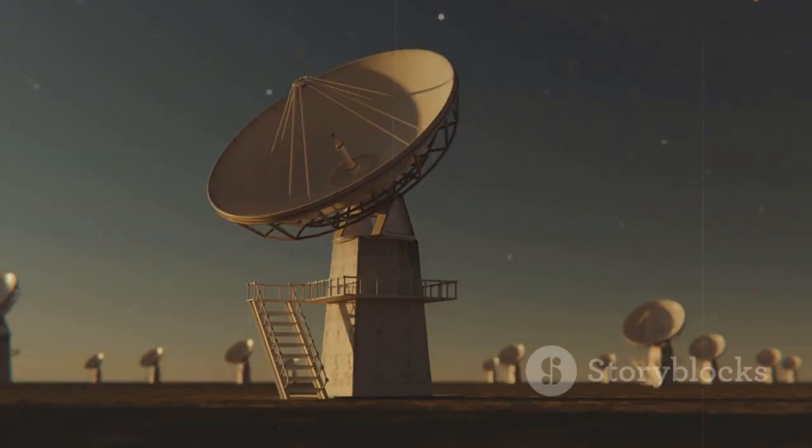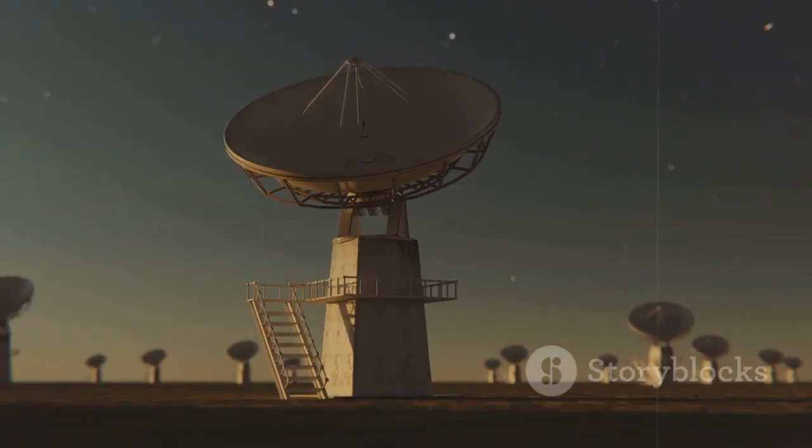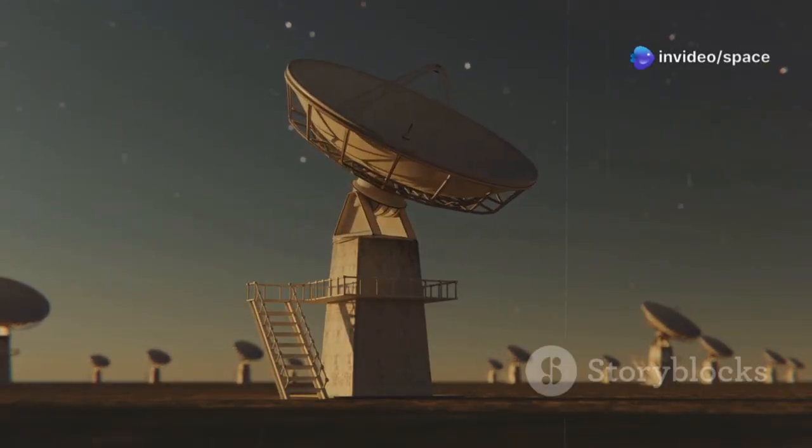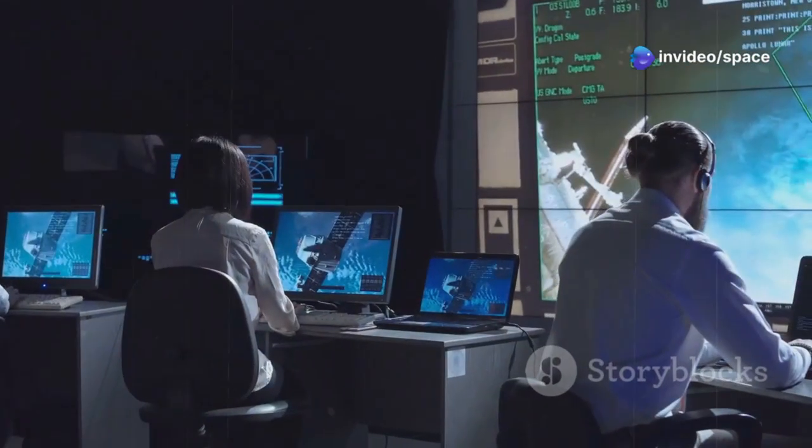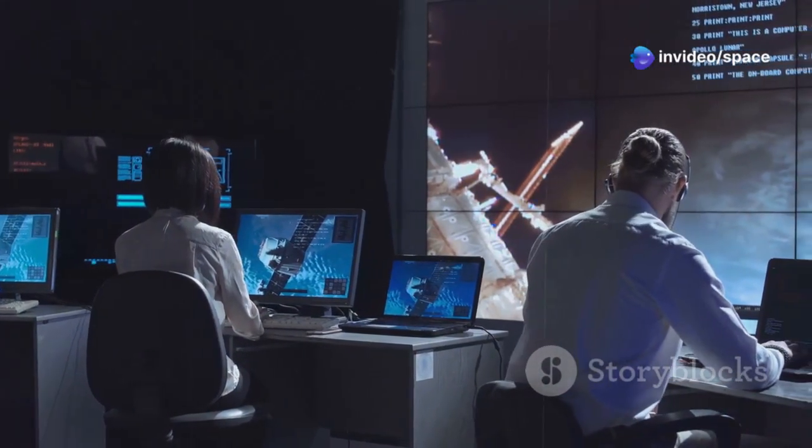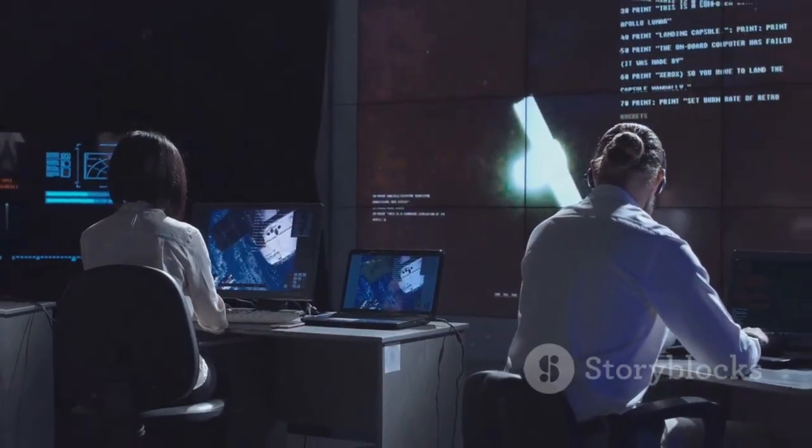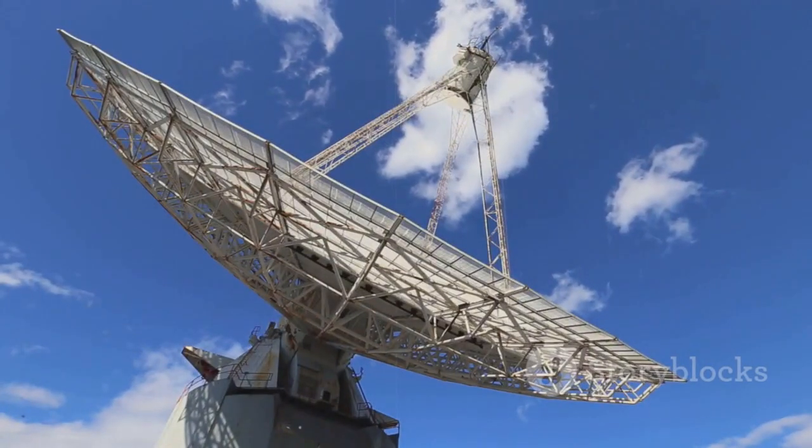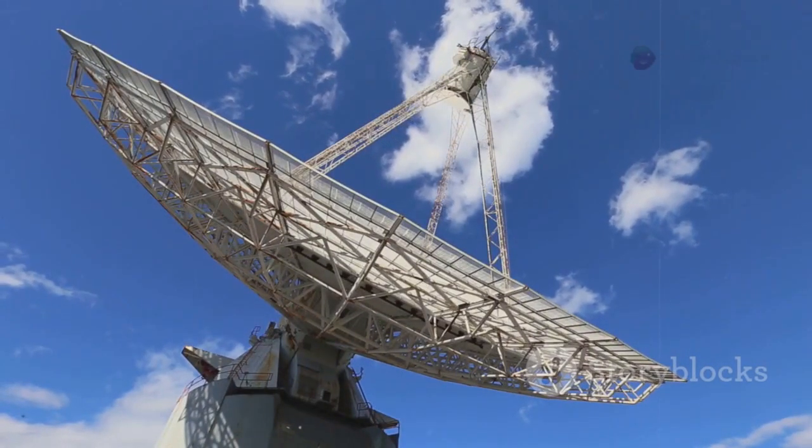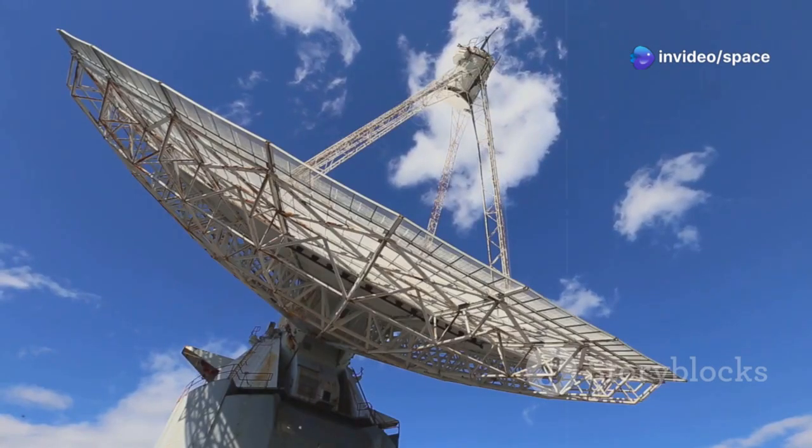NASA relies on the Deep Space Network massive radio antennas in California, Spain and Australia to hear its faint whisper. In July 2023, a miscommand tilted Voyager 2's antenna away from Earth, and contact was lost. Engineers sent a powerful signal from Canberra, Australia and weeks later, detected a faint heartbeat. The probe was alive.